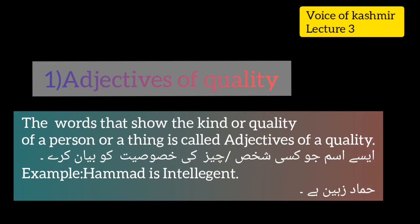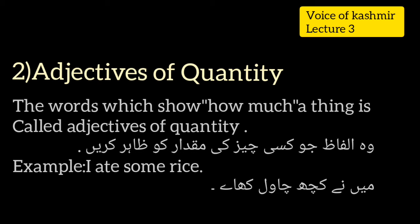First, we discuss adjectives of quality. The words that show the kind or quality of a person or thing are called adjectives of quality. In any sentence, the word that describes the quality of a thing or person — for example, 'Hamad is intelligent' — here 'intelligent' is the word that shows the quality of the noun 'Hamad', so it is the adjective of quality.